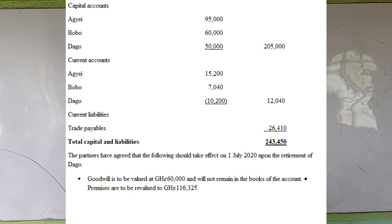A negative current account balance means the partner has overdrawn that account — it is a debit balance on the current account. We know that both capital accounts and current accounts normally have credit balances, so if there is a negative for a particular partner, that is a debit balance. Please take note of that. Under current liabilities we have trade payables 26,410, giving total capital and liabilities of 243,450.